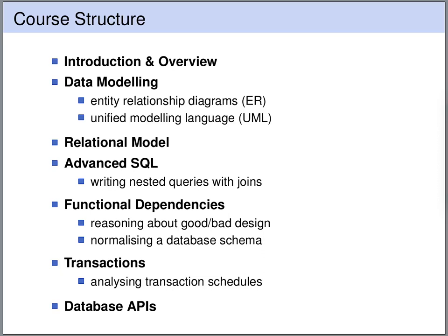The structure of this course is as follows. First we'll start with an introduction and overview — that's what you're currently listening to. Then we will look at data modeling; our main tool there will be entity relationship diagrams. Next we will translate these conceptual models into the relational model and design the structure of our database. Once we've designed this structure, we will start querying the database using SQL. Next we will look at functional dependencies and how to reason about good and bad database design. And finally we will look at transactions and a little bit of database APIs.